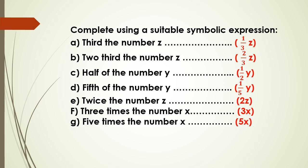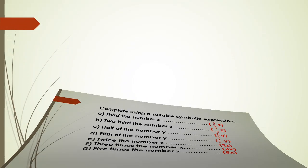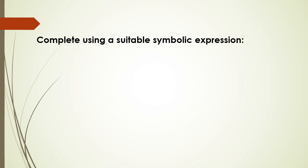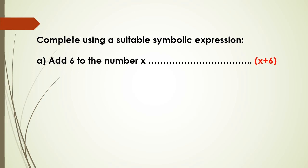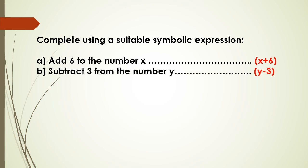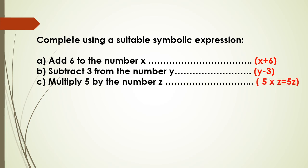Three times the number x will be 3x. Five times the number x will be 5x. Now complete using a suitable symbolic expression: add 6 to the number x, so it will be x plus 6. Subtract 3 from the number y, so it will be y minus 3.